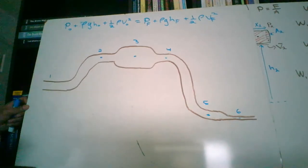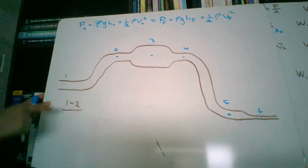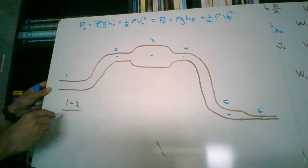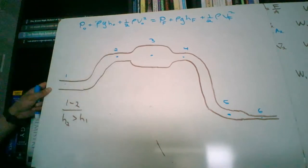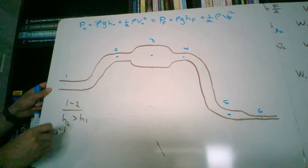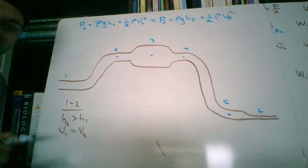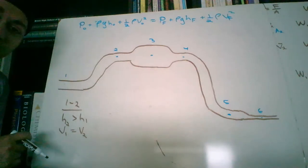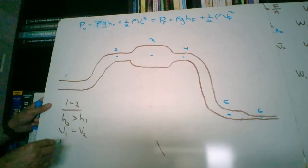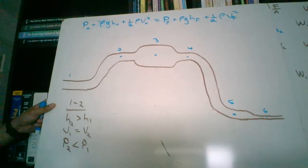Going from point 1 to point 2: H2 is bigger than H1 — it's at a higher height. The velocity at 1 equals the velocity at 2 since the cross-section didn't change. So the height is playing a factor, not velocity. Anytime you go up in elevation, pressure decreases. Therefore, pressure 2 is going to be less than pressure 1.